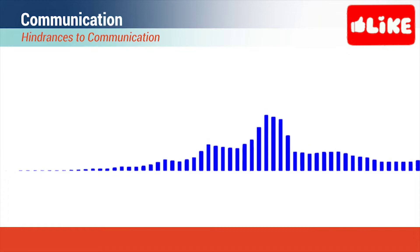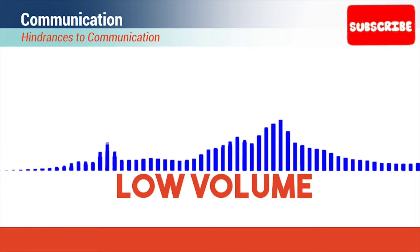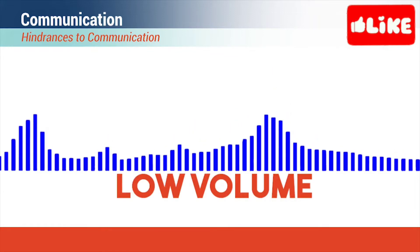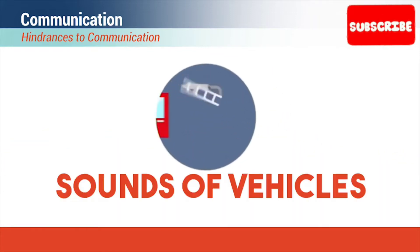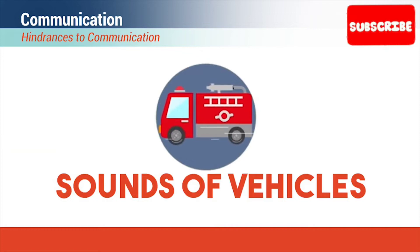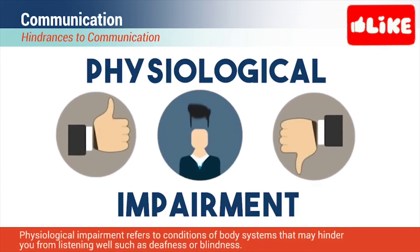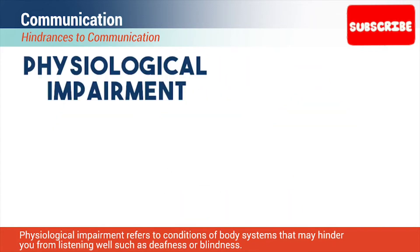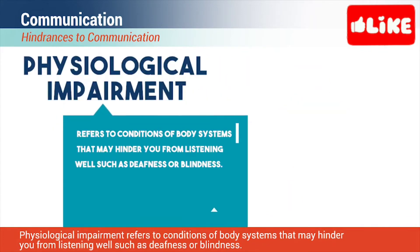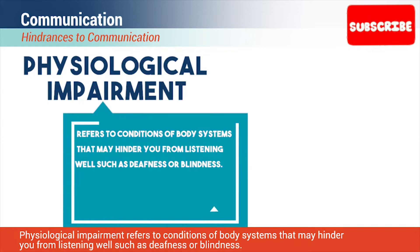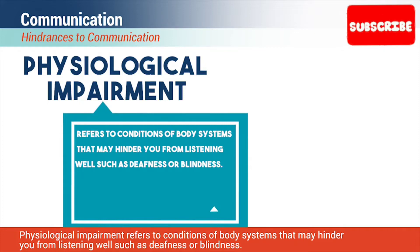These include low volume and sounds of vehicles and signals. Physiological impairment refers to conditions of body systems that may hinder you from listening well, such as deafness or blindness.